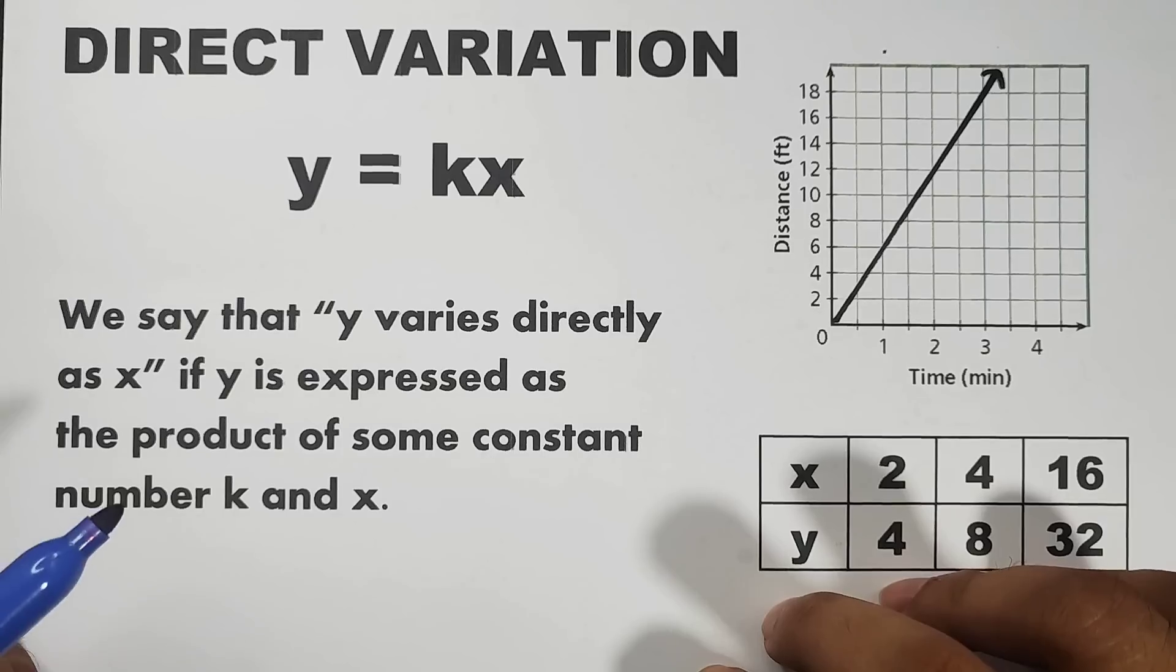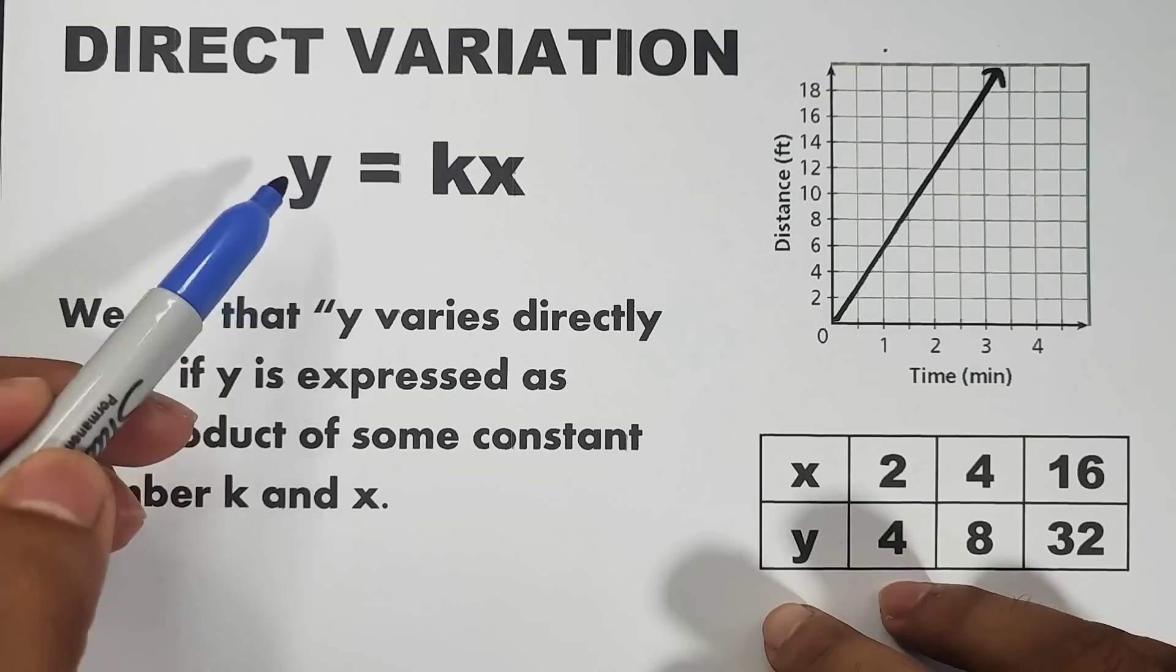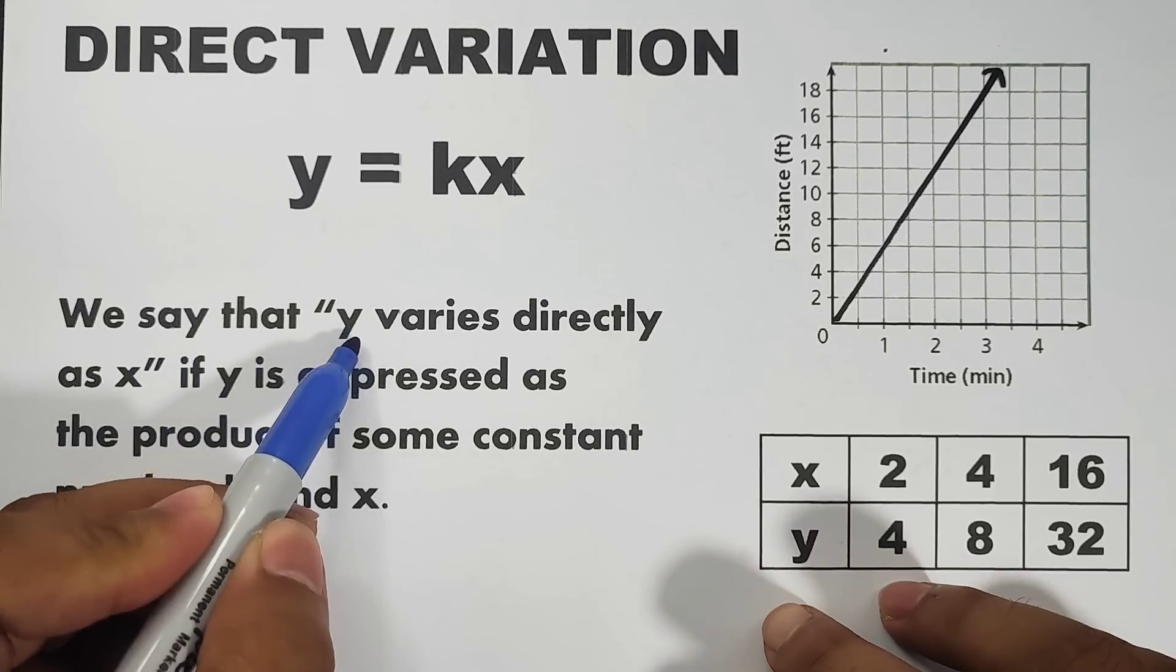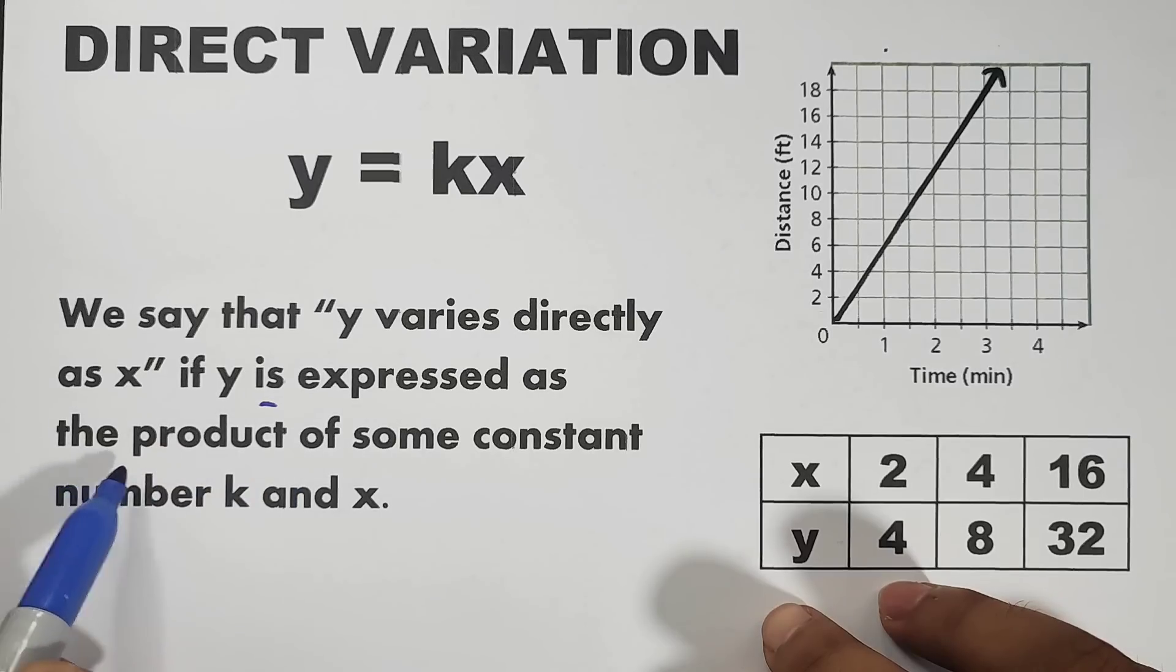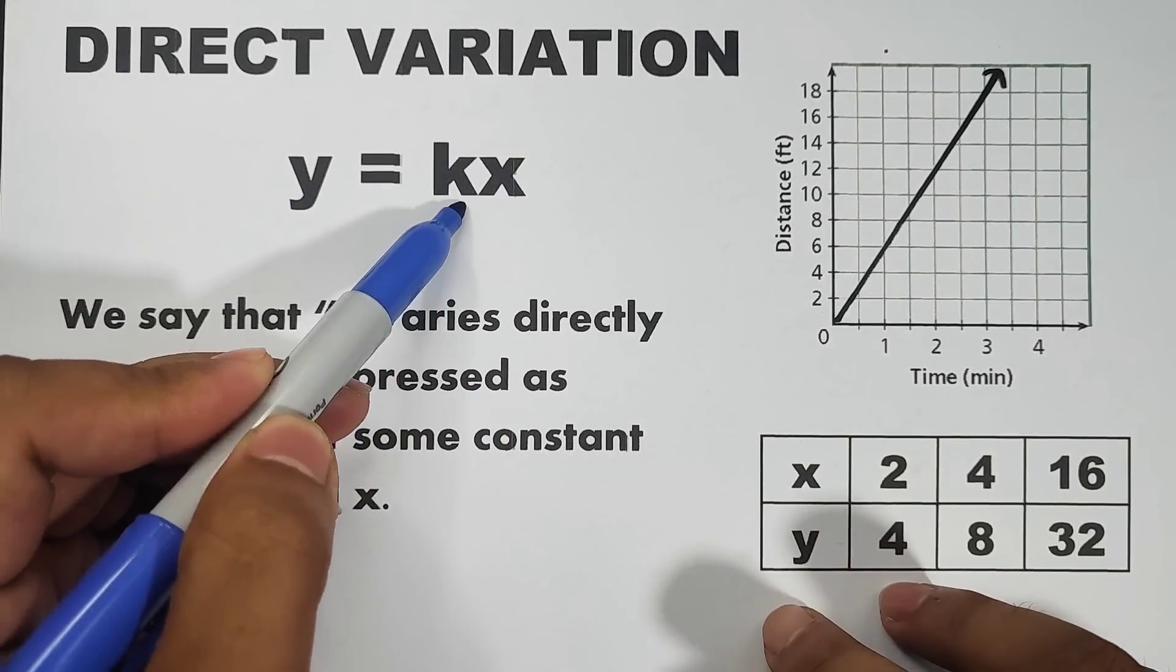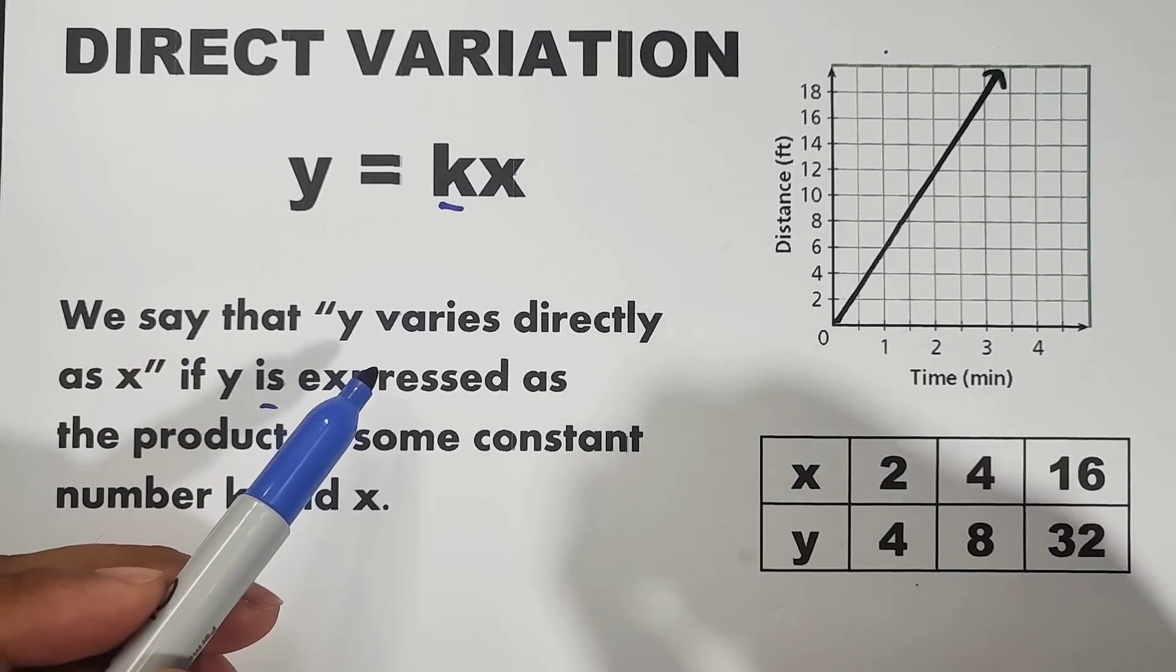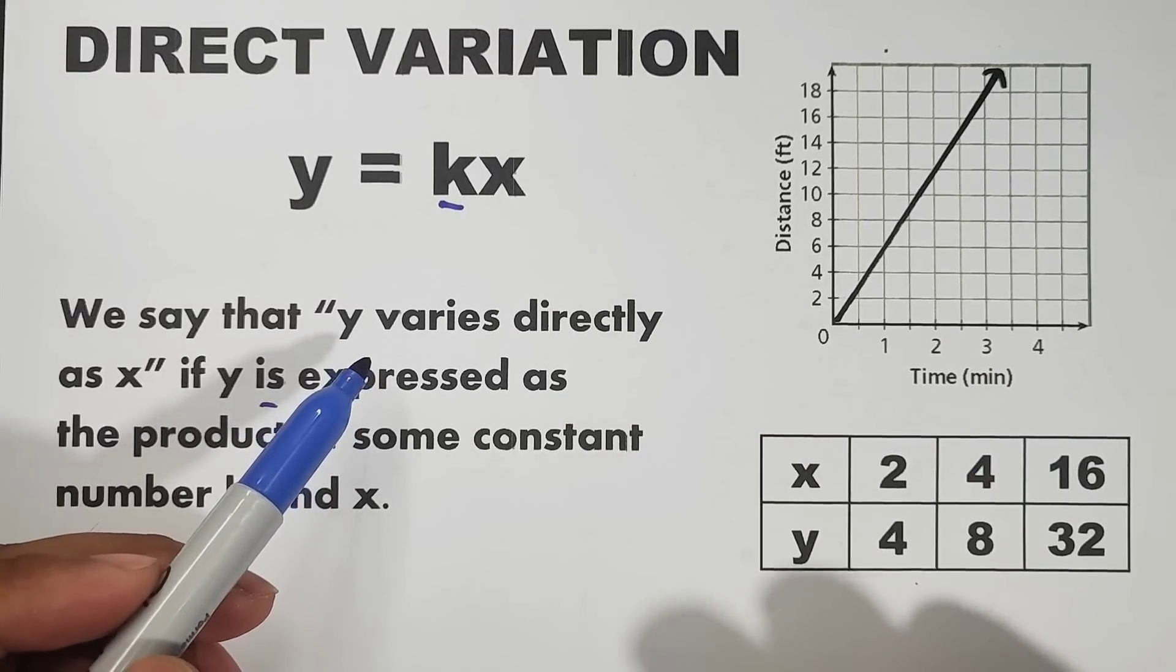And the equation that is being used in representing direct variation is simply y equals kx. When you say variation, that is, y varies directly as x if y is expressed as the product of some constant number k and x. In this given equation, the two variables here are y and x. And this variable k is the constant of variation. Meaning, this one is a number, k represents a number, and is considered as the constant of variation.